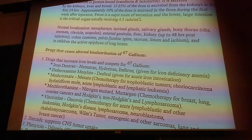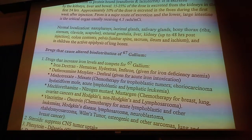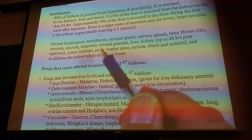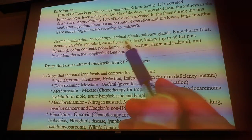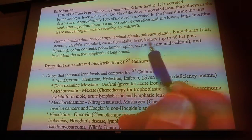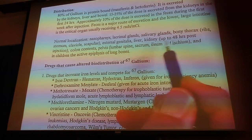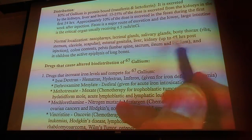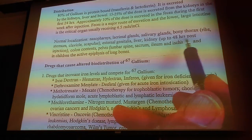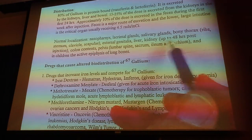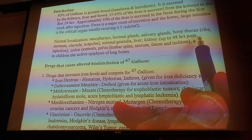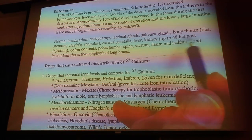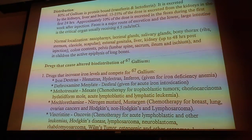Normally the kidneys — and some books say this — you'll sometimes see the genitalia as well. But kidney activity is expected up to 48 hours. So that means if you see kidney activity at 72 hours, the patient probably has a kidney infection going on.